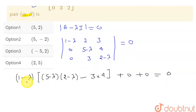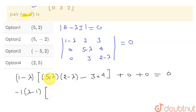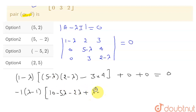Taking minus 1 common gives (−1)(λ−1). Multiplying out (5−λ)(2−λ) gives 10 minus 5λ minus 2λ plus λ², and minus 3×4 gives minus 12, all equal to 0.